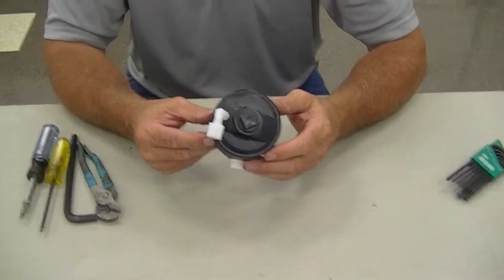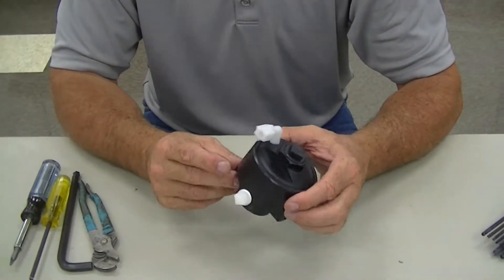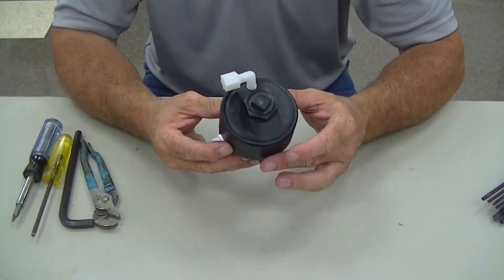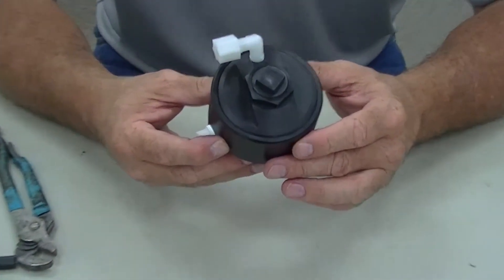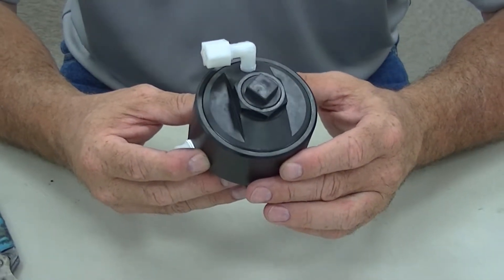What we have here is the Nordson Universal Fluid Pressure Regulator. This is the device that regulates how much flow you will be having to your spray device.